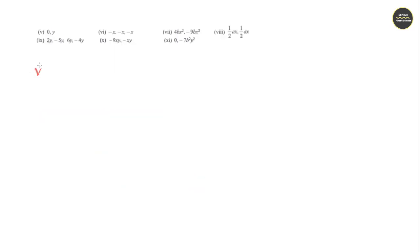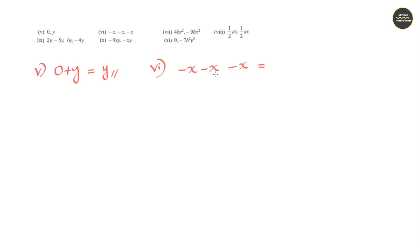Question number 5: 0 plus y. Here only one variable is there, so the answer is y itself. Question number 6: minus x plus minus x plus minus x. When three minus x are added, the answer is minus 3x.